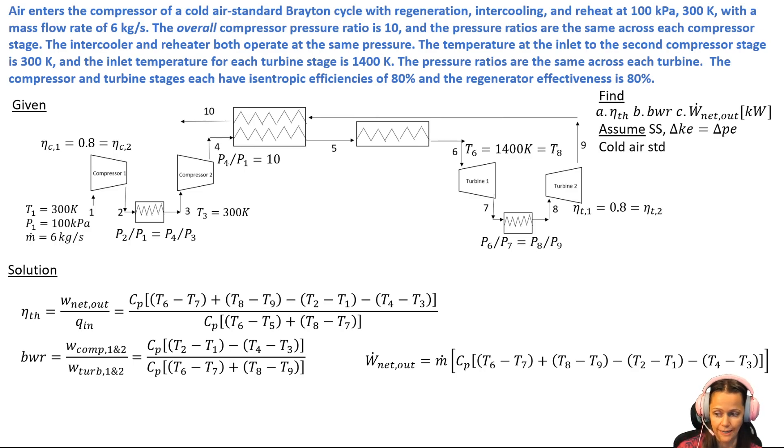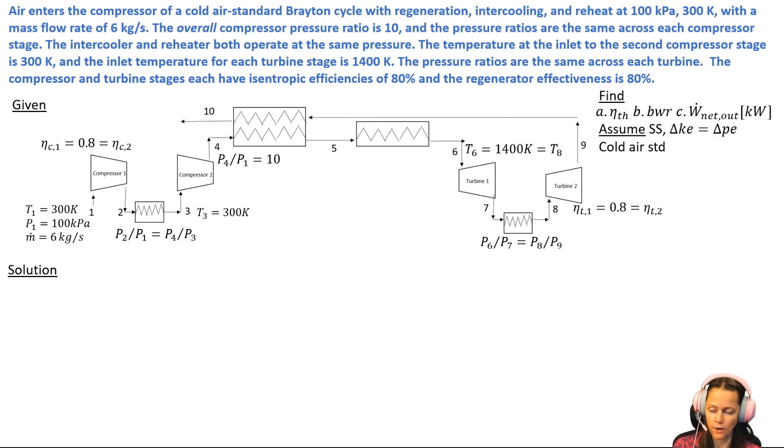But here with the w dot net output, the CP definitely does not divide out, so you do need to make sure that you put that in there. Let's start solving for our temperatures. For state one we're given that. State two, well I've got an isentropic efficiency of 0.8.